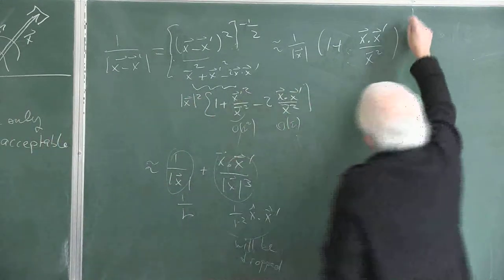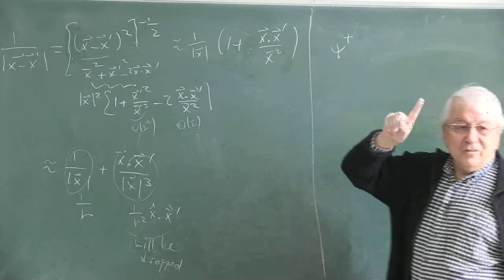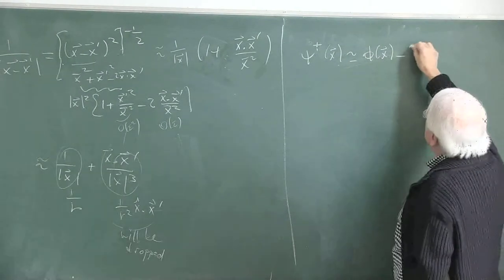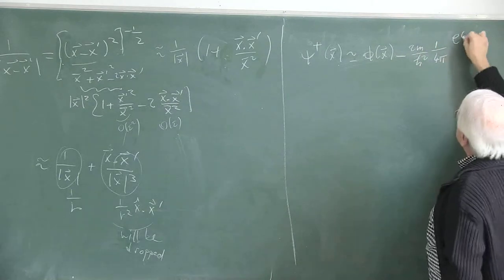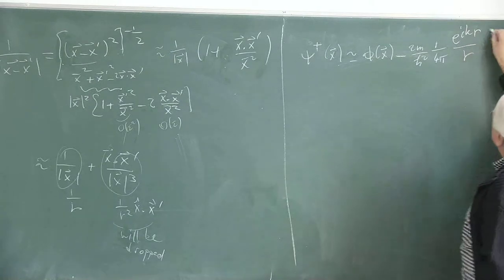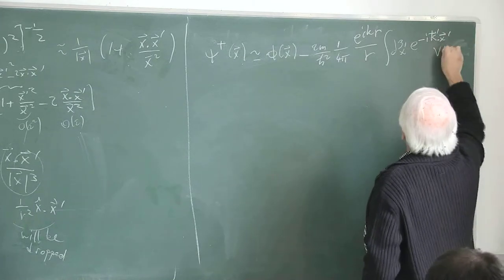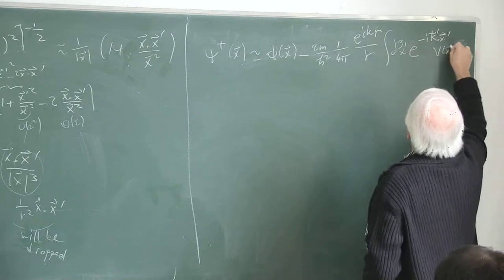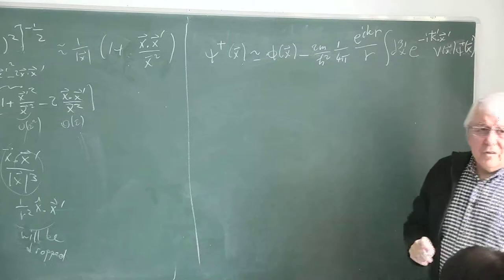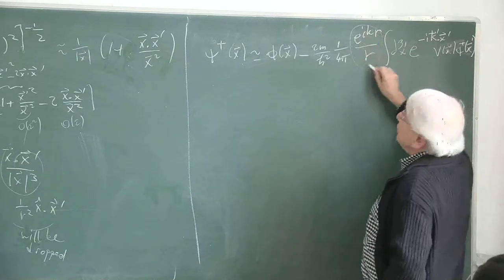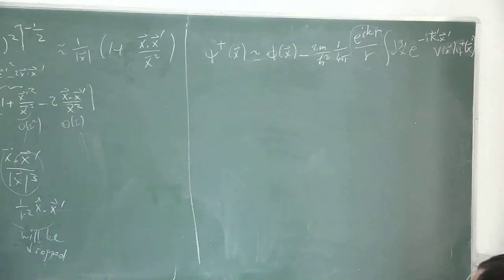Therefore our Lippmann-Schwinger equation becomes: ψ+(x) = φ(x) − (2m/ℏ²)(1/4π)(e^{ikr}/r) ∫d³x' e^{−ik'·x'} V(x') ψ+(x'). We have now decided the sign — the correct one is ψ+. This is the new form of the Lippmann-Schwinger equation, physically correct, taking into account all physical constraints: x large, x' small. It displays the beautiful behavior of a spherically outgoing free-particle wave.